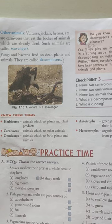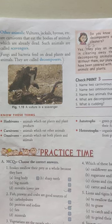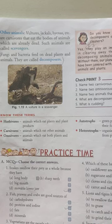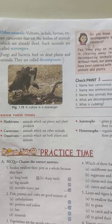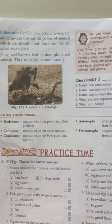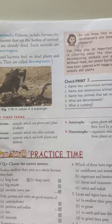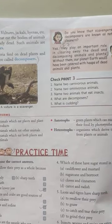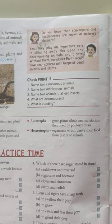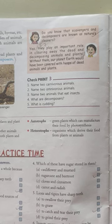Now here are some important terms you have to learn. Herbivores: animals which eat plants and plant products. Carnivores: animals which eat other animals. Omnivores: animals which eat both plants and animals. Autotrophs: green plants which can manufacture their food by photosynthesis. Heterotrophs: organisms which derive their food from plants or animals.